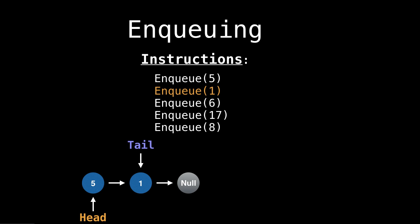But as we enqueue more elements, you can see that we're pushing the tail pointer forward. So we're adding a node and then getting the tail pointer to point to the next node.